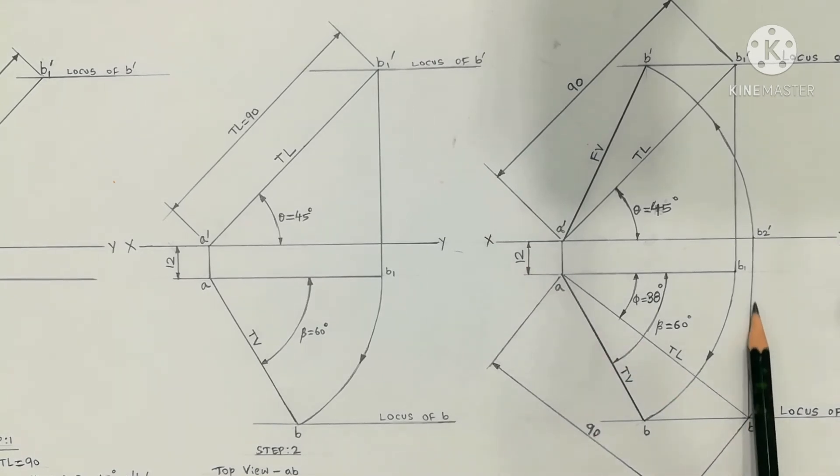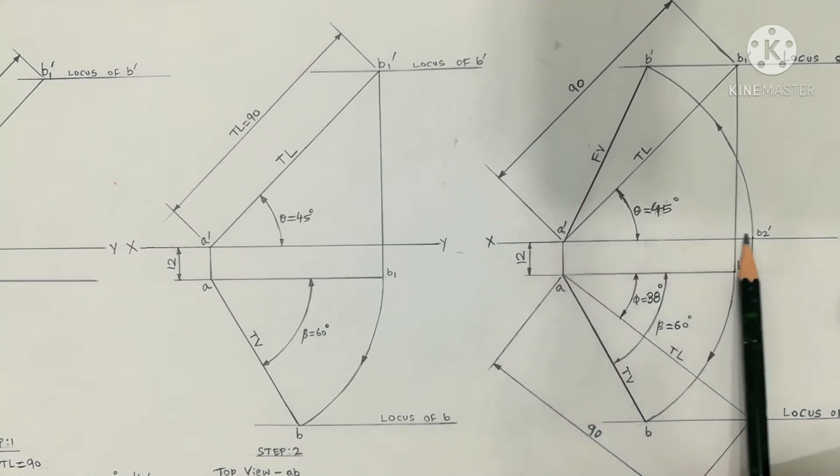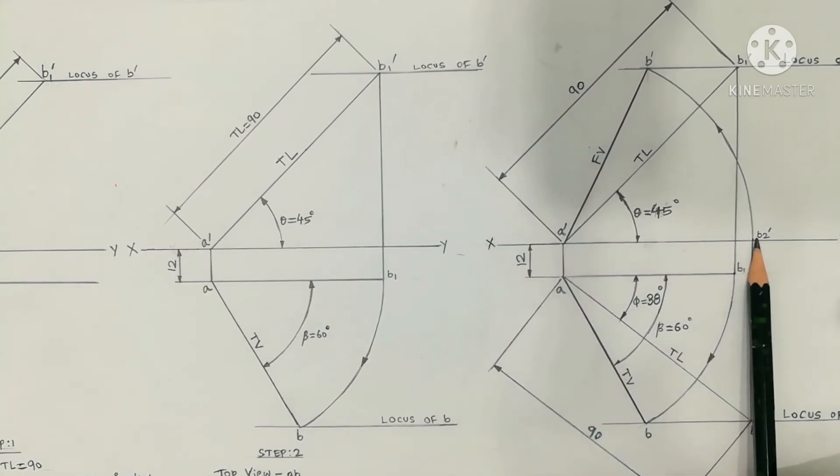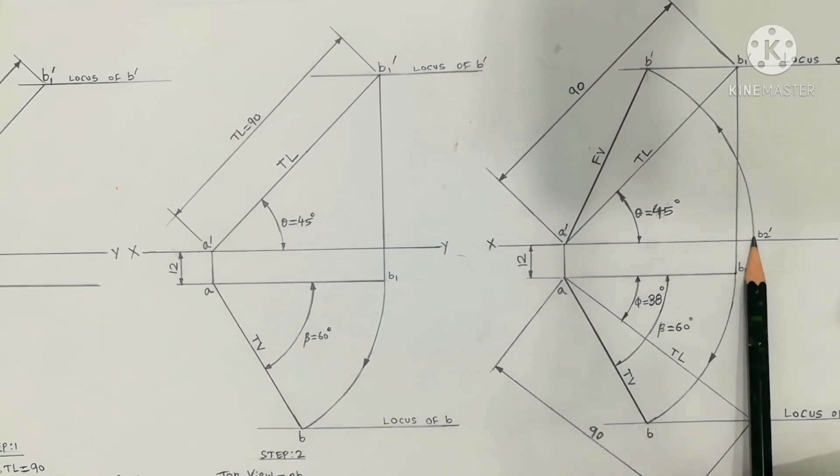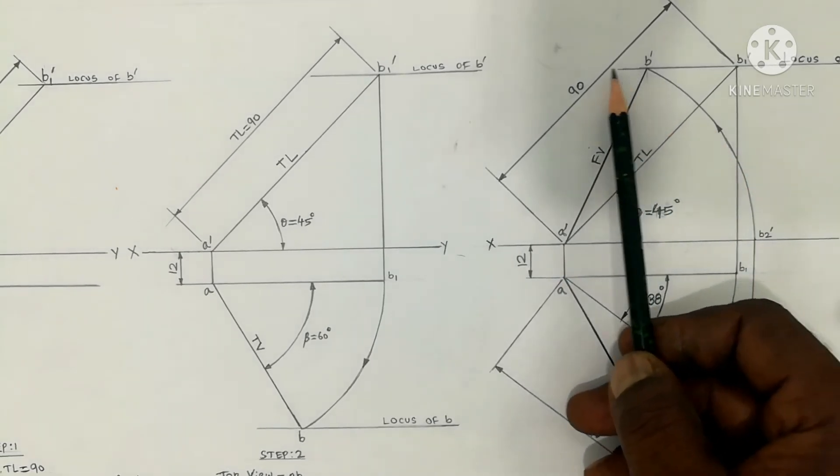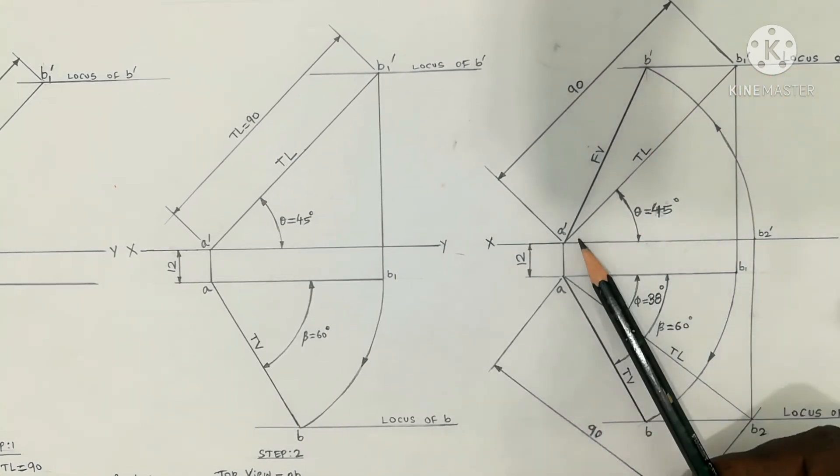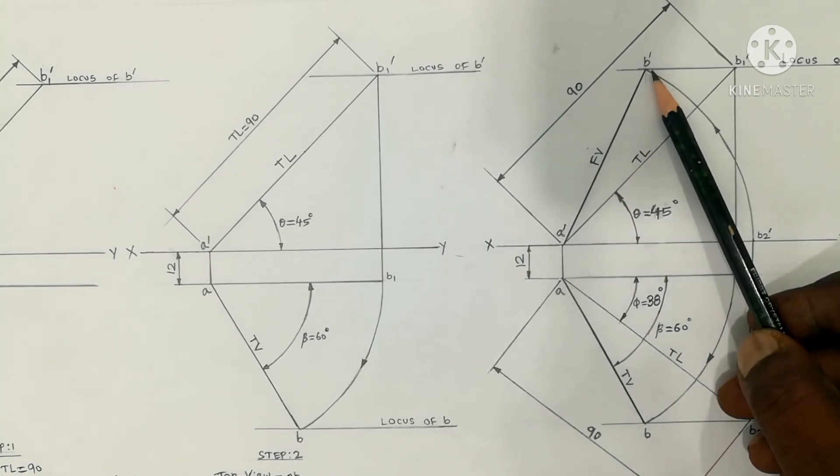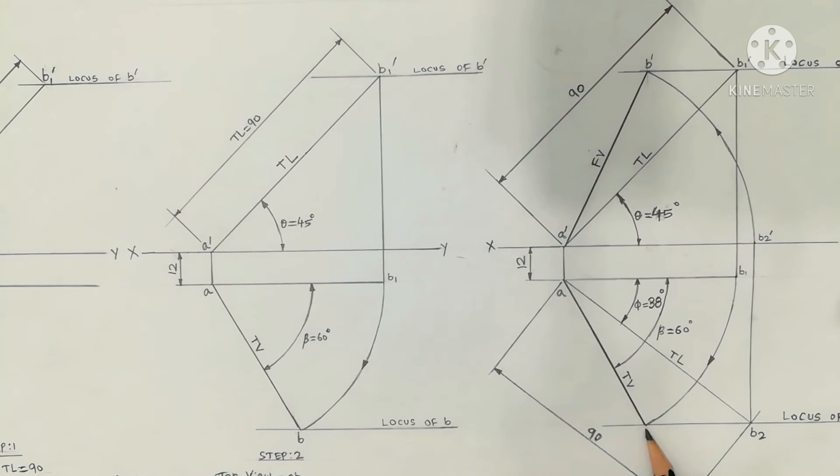This is the vertical projector. Draw a line. The horizontal line passing through A' meets the point B2'. Now using compass, A' and B2 as radius, draw an arc upward. In the arc, the locus line passing through B1' meets the point B'. Join A' and B' is the final front view. And AB is the final top view.